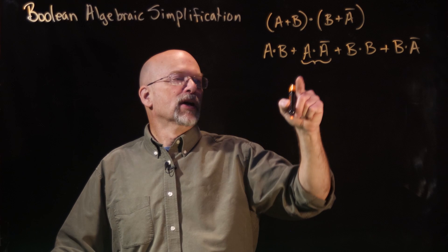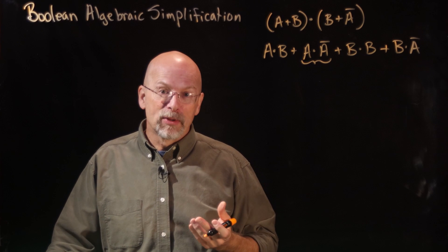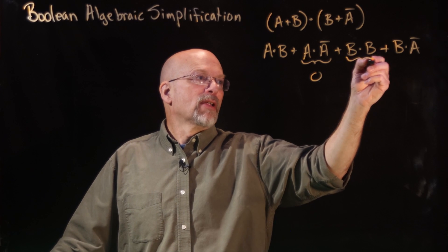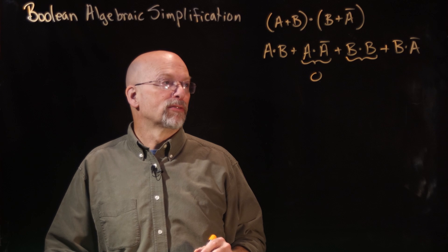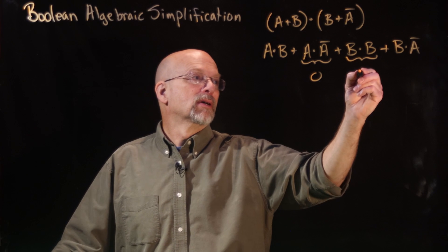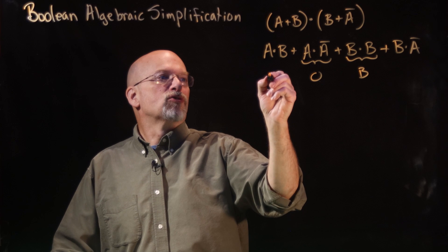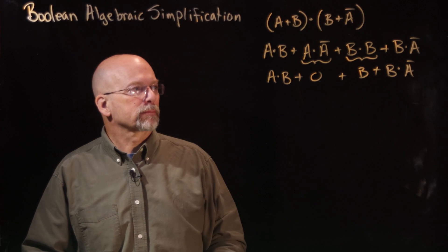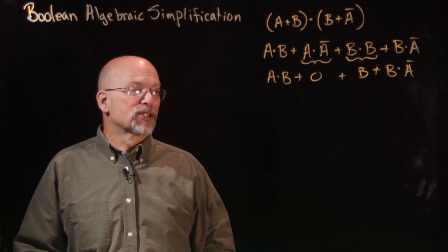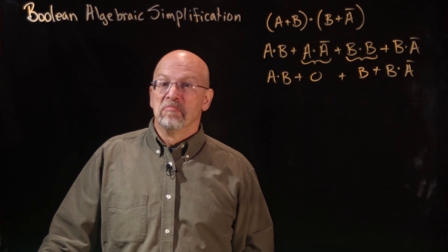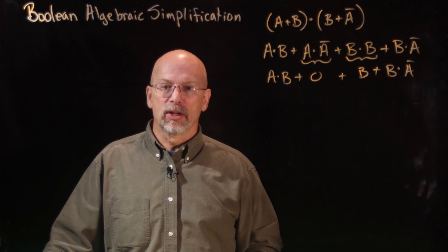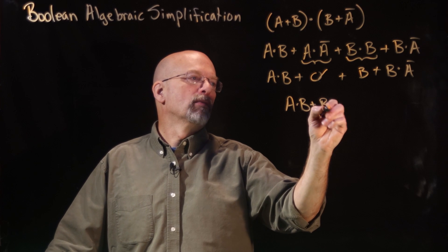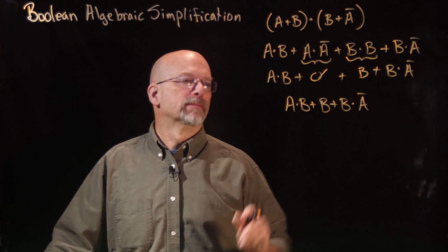A couple of red flags showed up. First: A AND A-bar — anything ANDed with its inverse is always zero. Second: B AND B — something combined with itself is itself. So let's drop down the other two products. Now we still have a red flag — that zero. What happens when you OR anything with zero? The zero drops out, and you get A·B OR B OR B·A-bar.